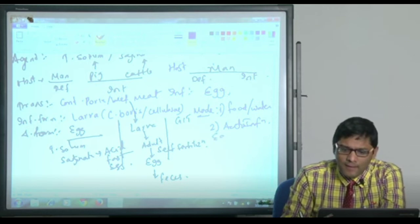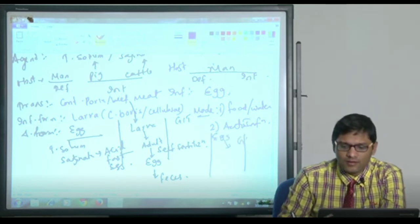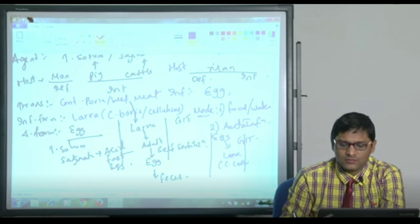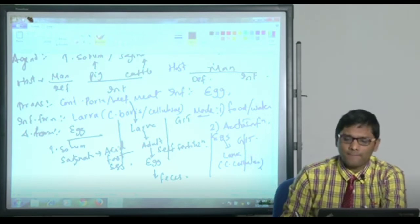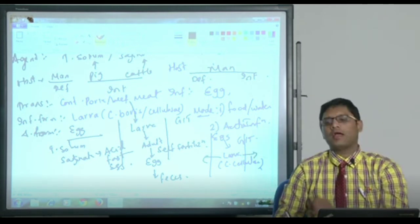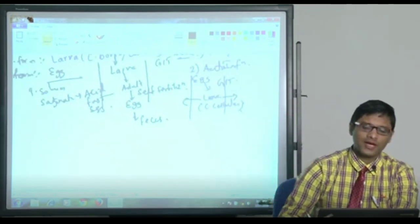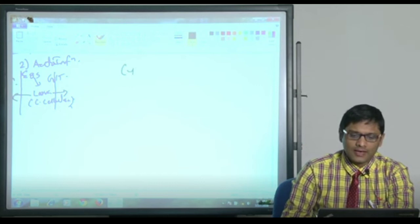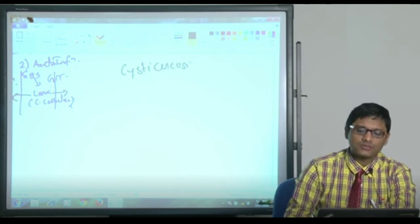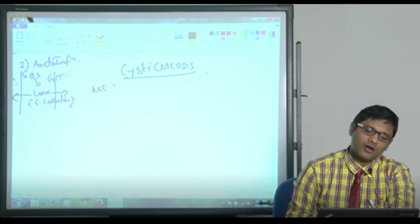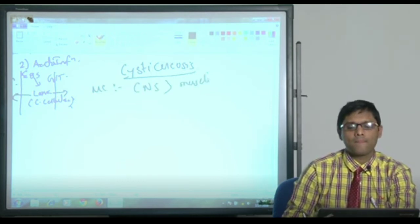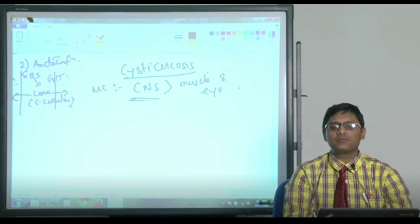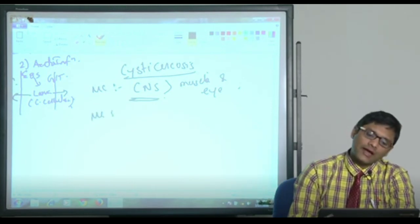Following ingestion of egg, inside GIT, egg will develop into larva. Larva is cysticercus cellulosae. This larva will penetrate GIT and deposit in various organs. The most common organ affected is CNS followed by muscle and eyes.